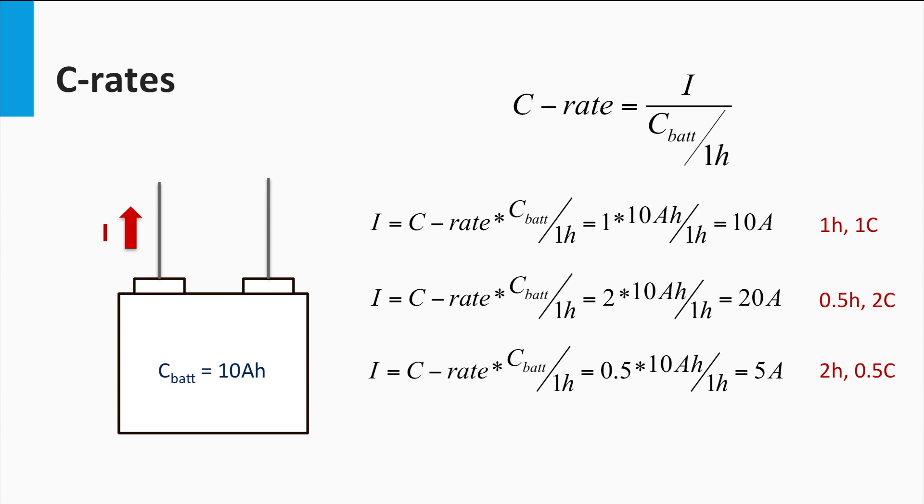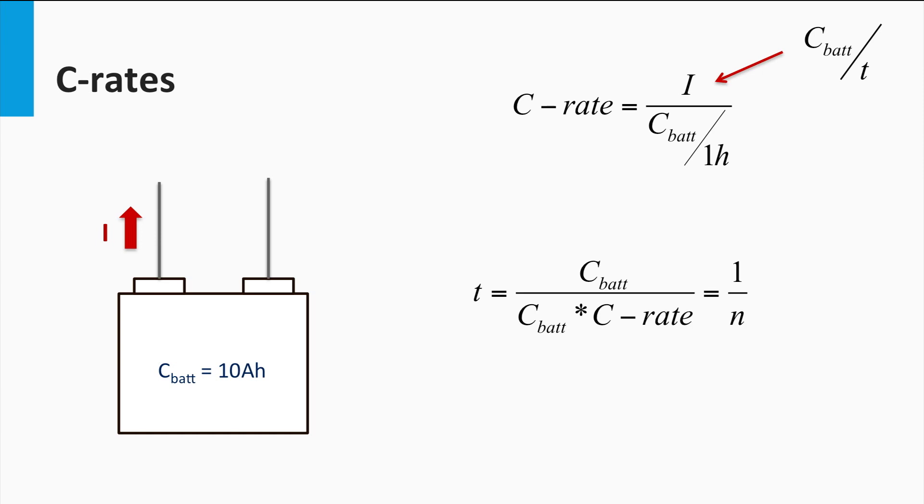Similarly, a C-rate of 0.5 implies that a discharge current of 5 Ah over 2 hours. In general, it can be said that a C-rate of N C corresponds to the battery getting fully discharged in 1 over N of an hour, irrespective of the battery capacity. In general, a higher or lower C-rate will depend on the charging and discharging current that the battery with a certain capacity experiences.